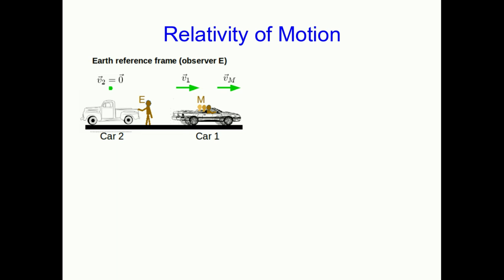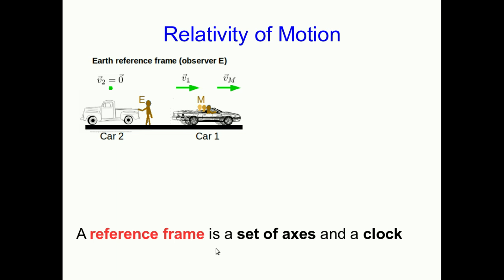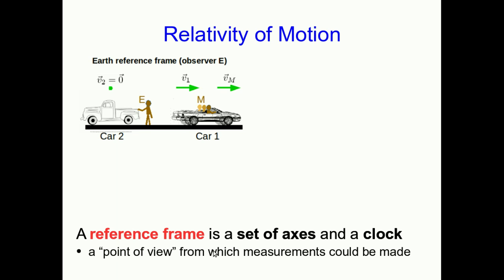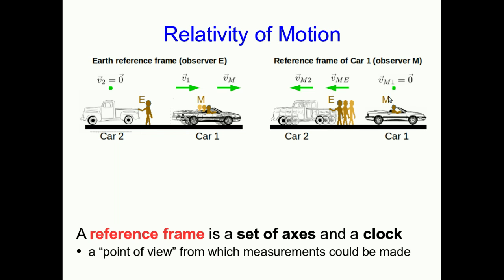Here's an observer — a person — who I've named E because they are in the Earth reference frame. There's a new word: a reference frame is a set of axes and a clock, or in other words, it's a point of view from which measurements could be made. Just as observer E can make measurements, observer M, who's moving along in this car and so I'm calling them reference frame M, moving with respect to the Earth, they can also make measurements. E has a set of axes for making their measurements; M also has a set of axes, but their axes move along with them and the car.